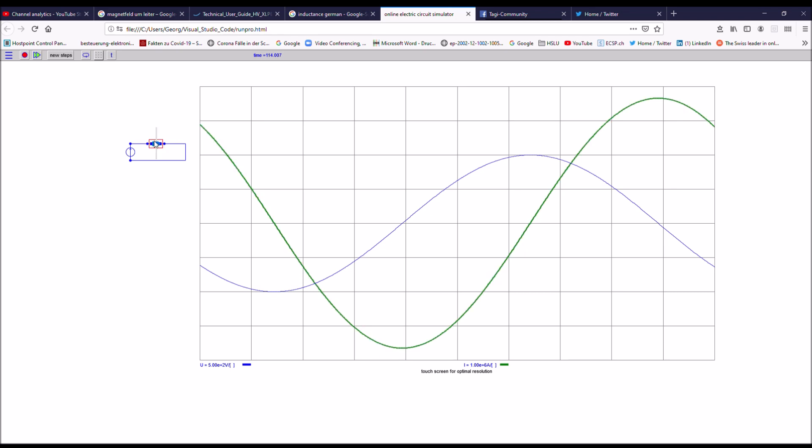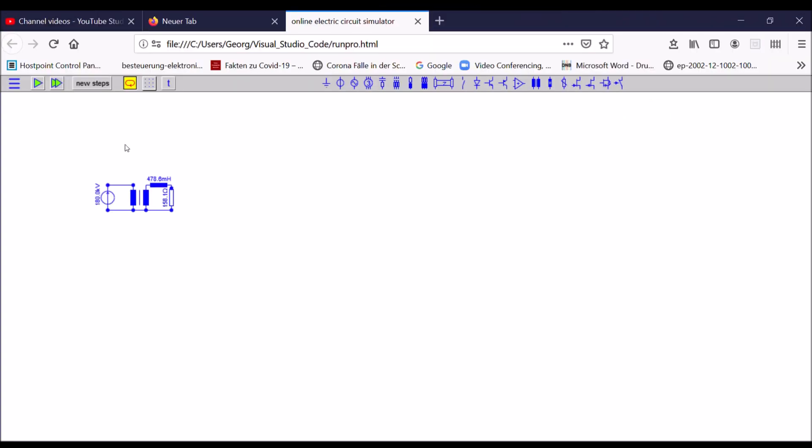You can also see the effect of the energy storage in the wire. You can see that the current, the green curve, is 90 degrees phase shifted with the voltage source. And this is the typical effect of reactive power.